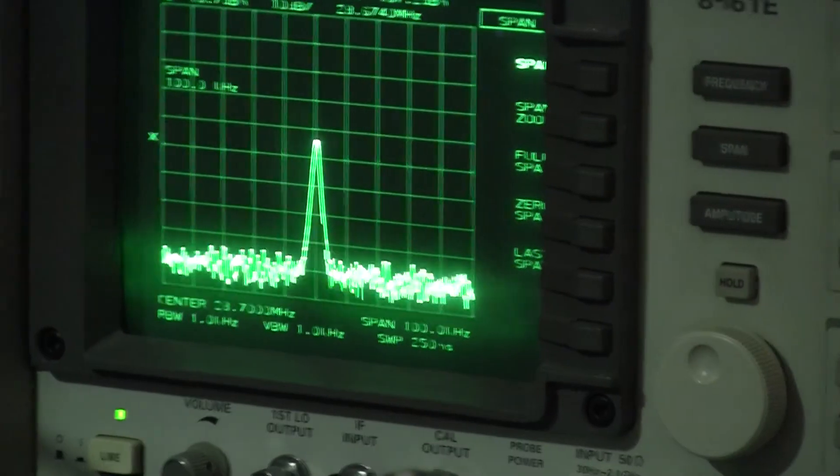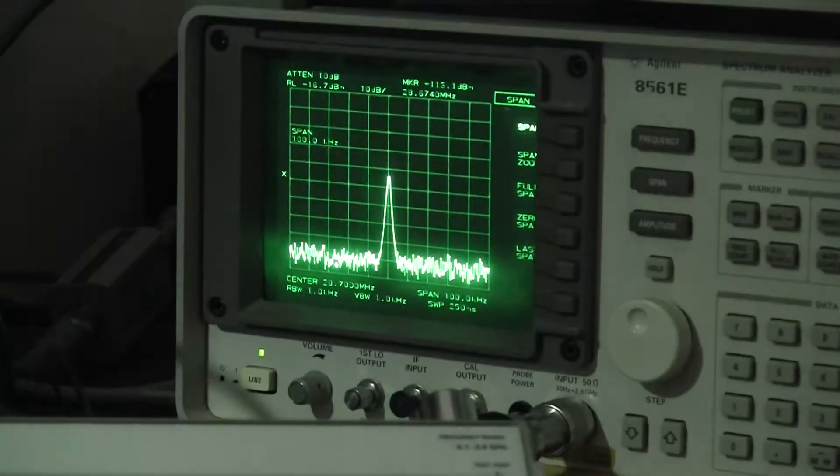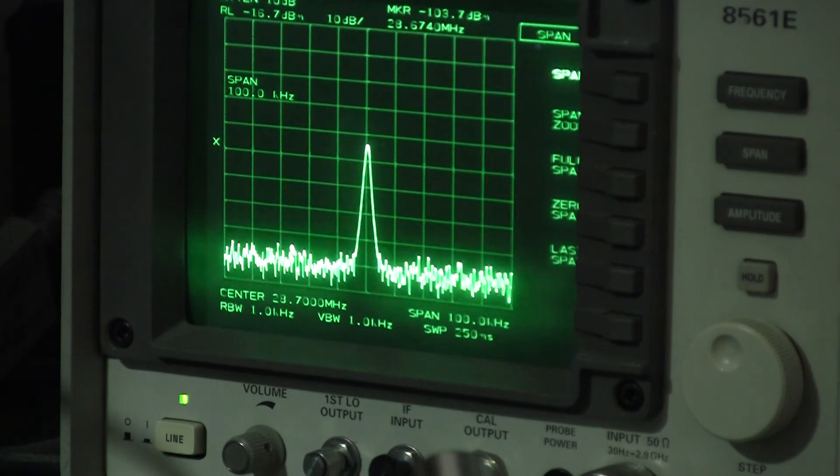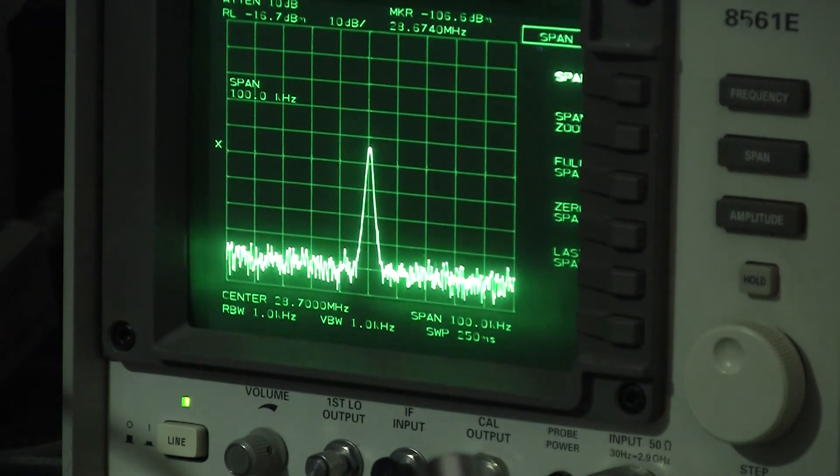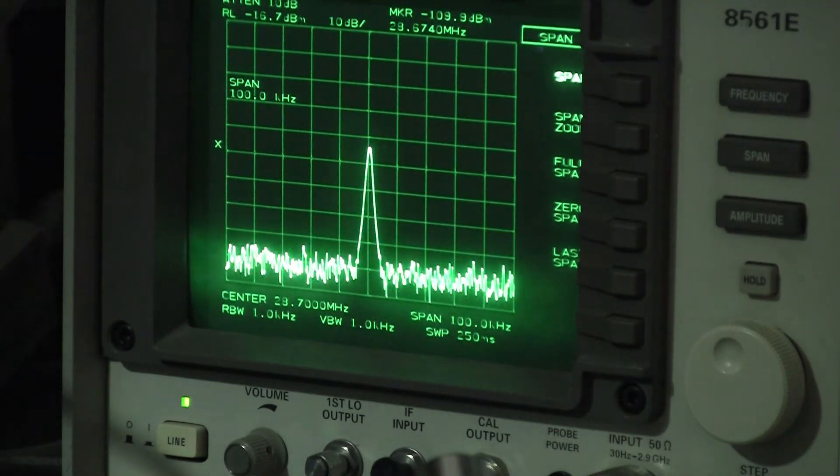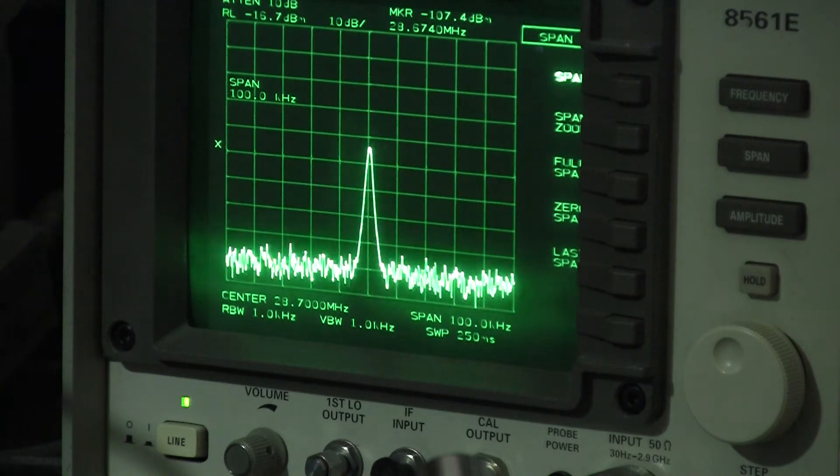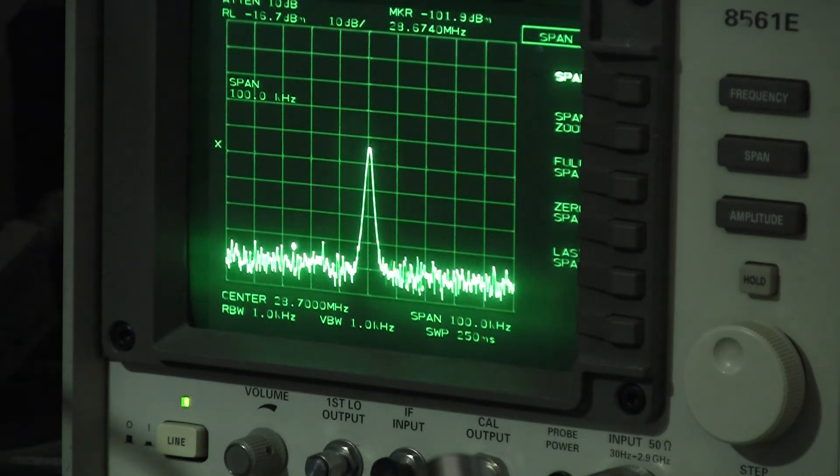This is just leakage from the driver stage through the PA. That's 10 dBs per division, and ideally there should be no leakage at all, but the fact is there's always going to be some. So I'm just going to tweak this little trimmer here, and you'll see that signal increase quite dramatically.